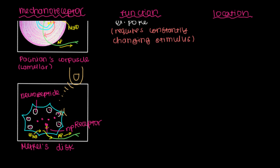And with Merkel's disc, like we mentioned, this is just a specialized keratinocyte or an epithelial cell. It's just like what we have sitting in our epidermis. So much so that it's located itself in the epidermis. It's found in the stratum basale.